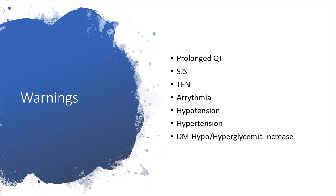The third warning: pentamidine could prolong QT. Prolonging QT means we will be faced with torsades de pointes, which could degenerate to ventricular arrhythmia. Polymorphic ventricular arrhythmia could degenerate to ventricular fibrillation, and if not defibrillated, could lead to asystole and death. Also, Stevens-Johnson syndrome or toxic epidermal necrolysis could actually lead to death if not appropriately addressed.